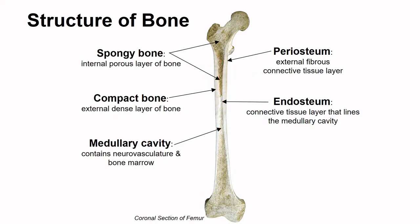An important thing to note about this organization is that there are connective tissue structures directly related to bone. On the outside, we have what is called the periosteum, which is most closely associated with the compact bone. The inside is called the endosteum, and that's most closely associated with the spongy bone. The entirety of a bone is covered in periosteum, except for the articular surfaces of bone, and we'll get back to that when we talk about the development of bones.